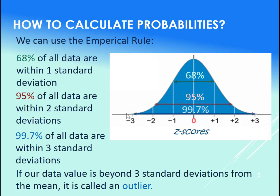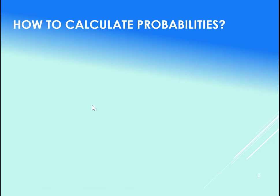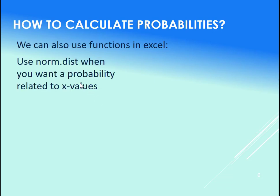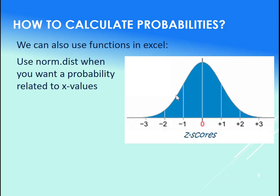Now if we didn't have z-scores perfectly one, two, or three, how else would we calculate probabilities? Well, Excel does a beautiful job of it. So let's use the Excel function. Norm.dist—we use that when we want to get the probabilities related to x values.